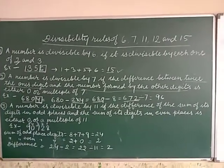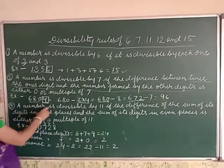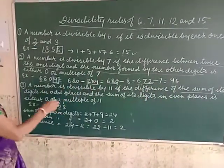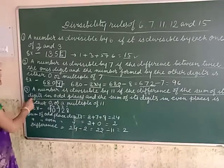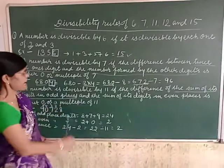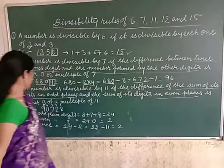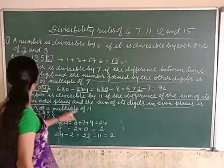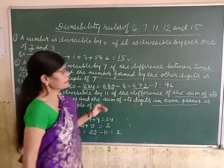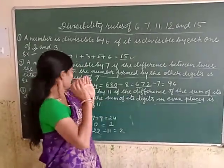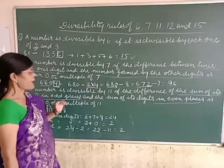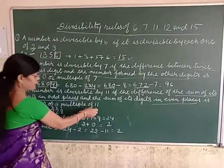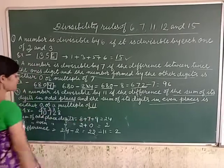Now, divisibility of 11. A number is divisible by 11 if the difference between the sum of its digits in odd places and the sum of its digits in even places is either 0 or a multiple of 11.